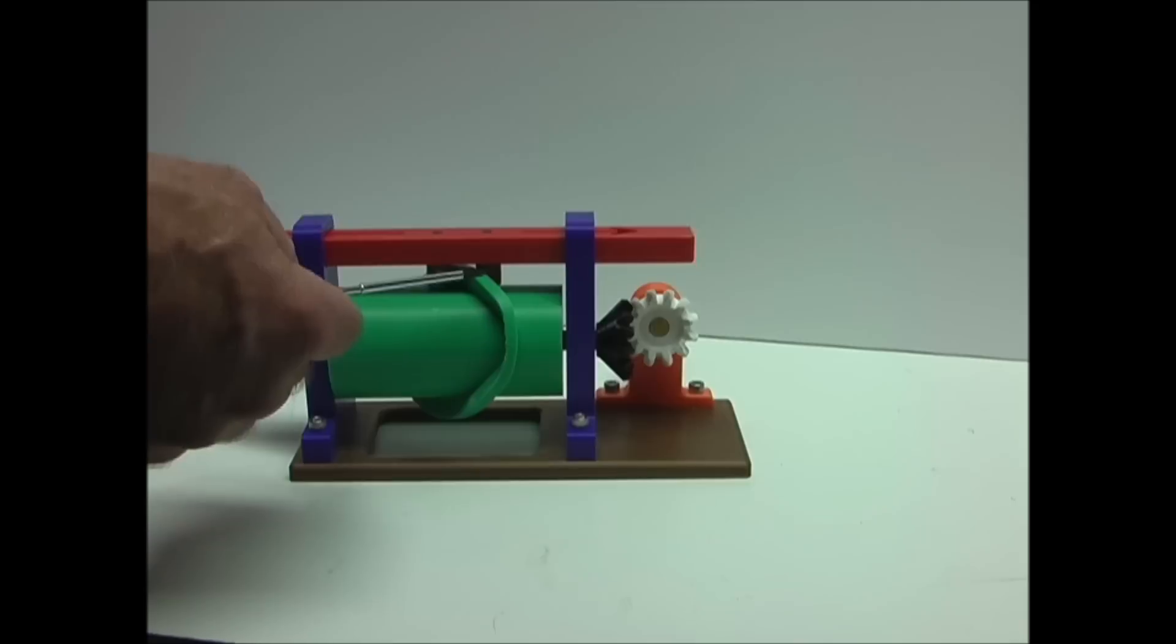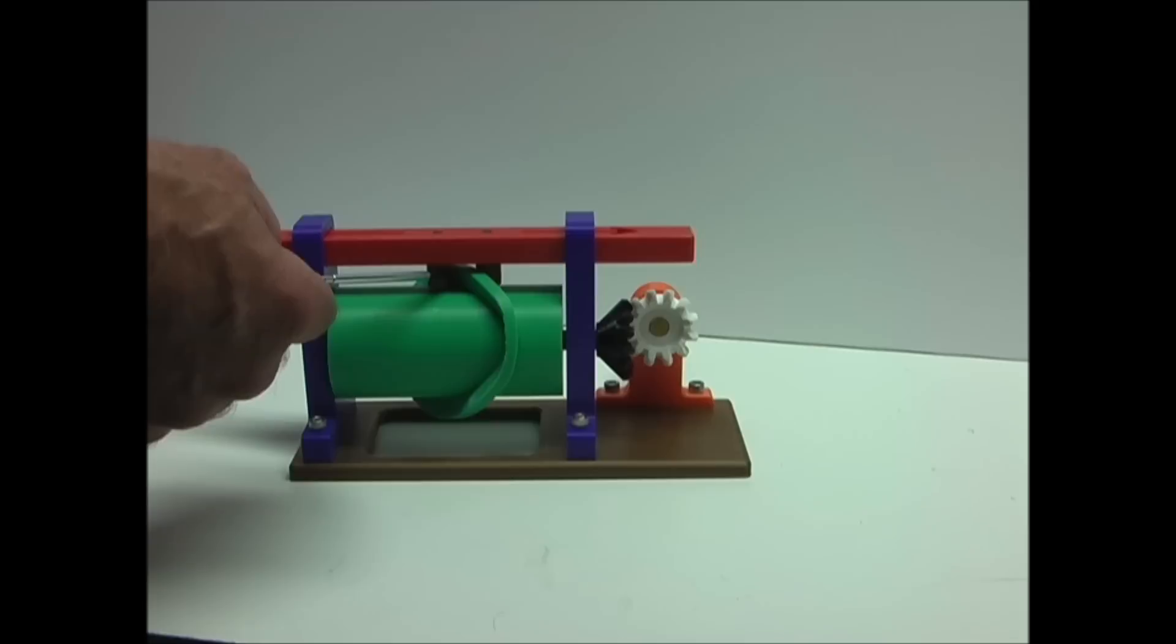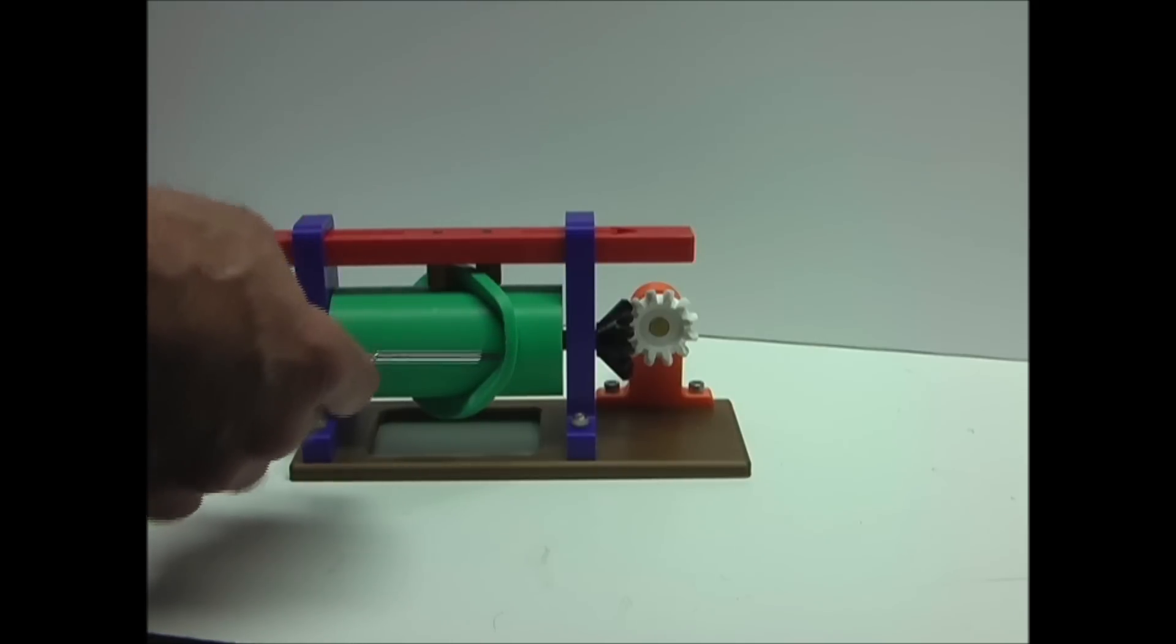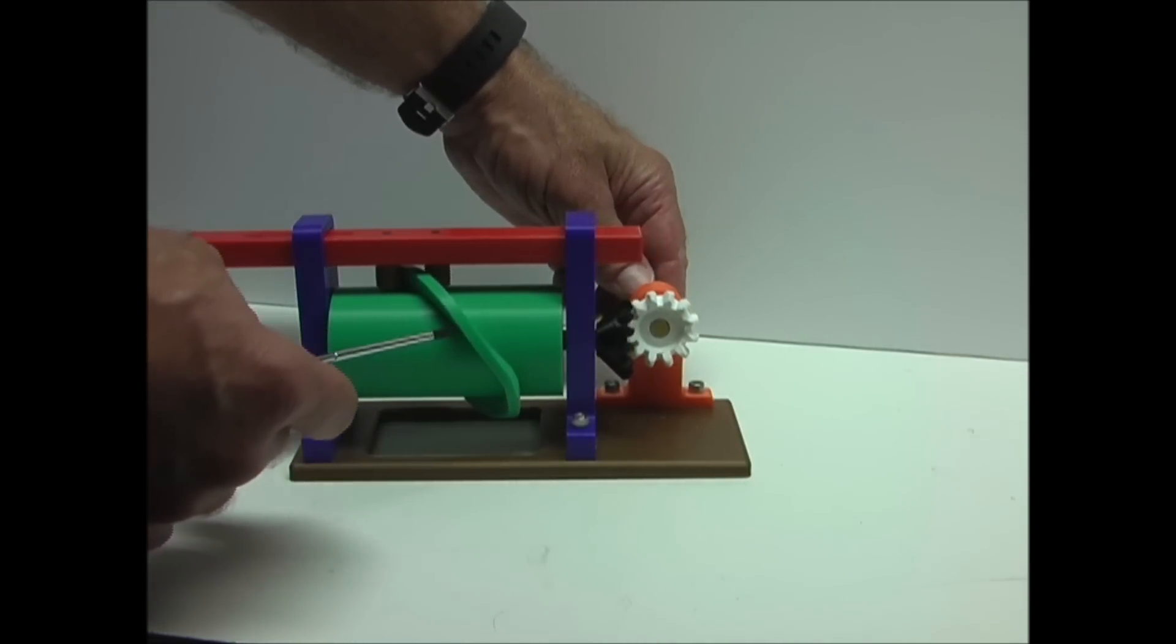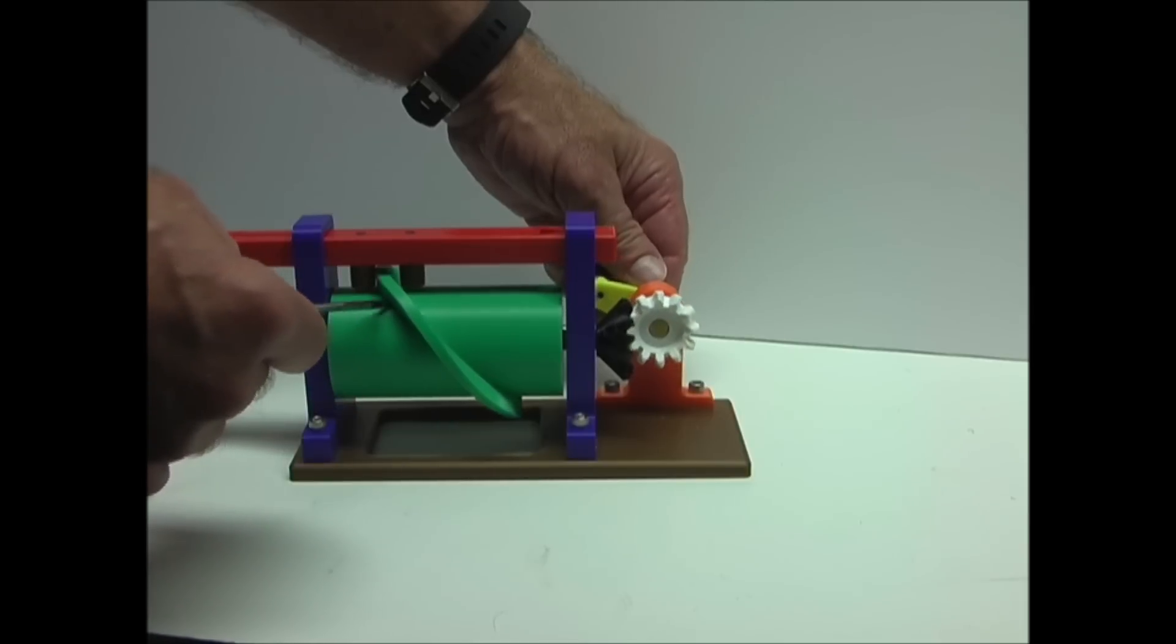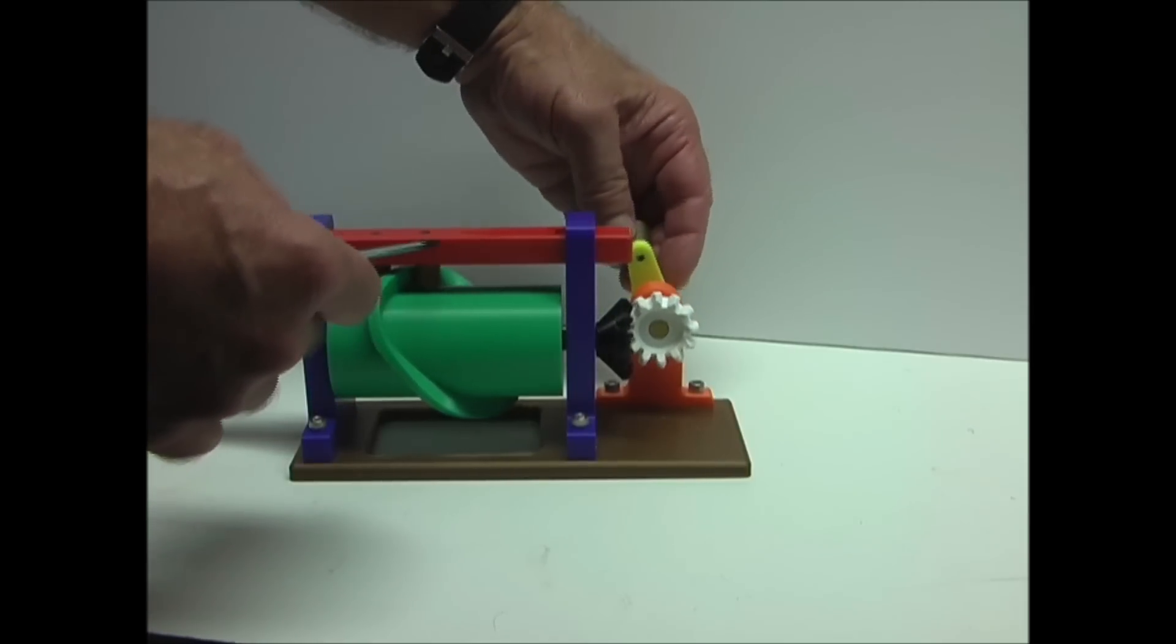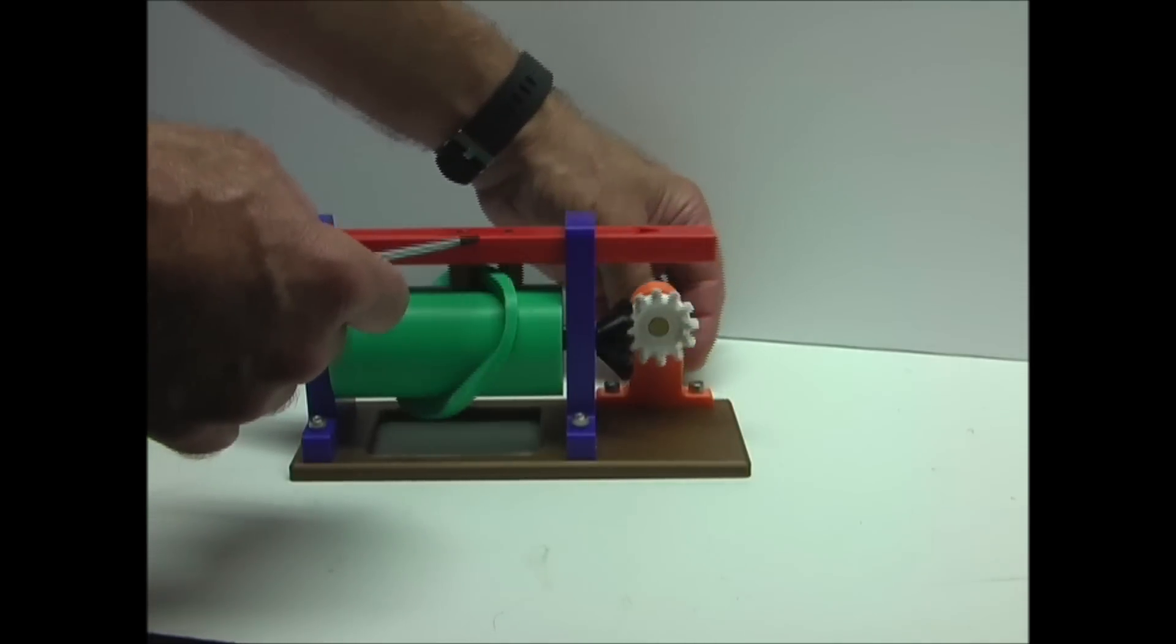This one also uses a cam profile and cam followers to follow this profile as it moves, and this cam is wrapped around this cylinder. So as the cylinder is rotated, the cam moves back and forth, moving this shaft back and forth.